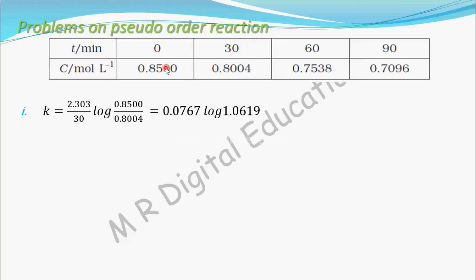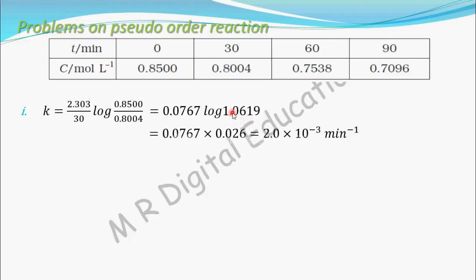So k = 2.303 / 30 × log(0.8500 / 0.8004). Simplifying: 2.303 / 30 = 0.0767, and log(0.8500 / 0.8004) = log(1.0619) = 0.026. Therefore k = 0.0767 × 0.026 = 2.0 × 10⁻³ per minute.